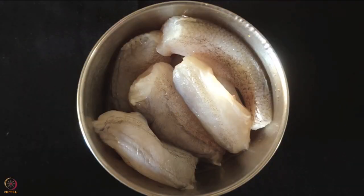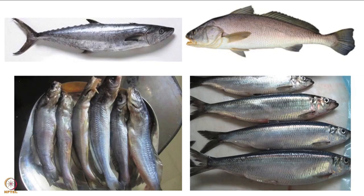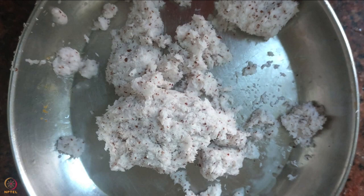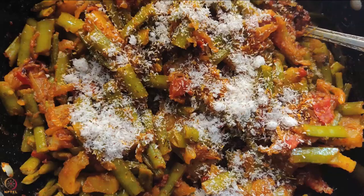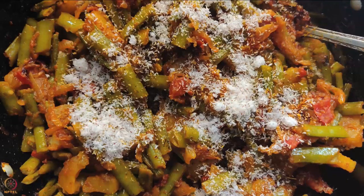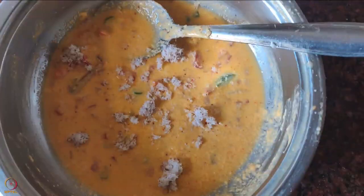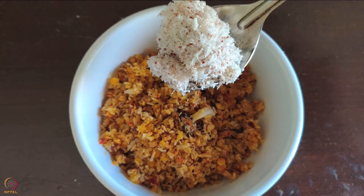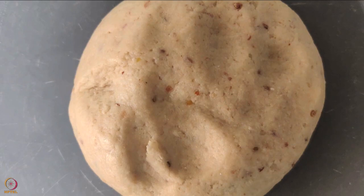If Bombay duck is not available, you can use Tengra fish, Seel fish, Indian herring, or Indian jew fish. The saved coconut residue can be roasted and stored — it can be added to curries, cheela batter, dry chutney powder with nuts and seeds, or flour for rotis and parathas. Adding roasted coconut enhances the fibre content and flavor.